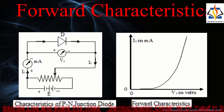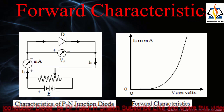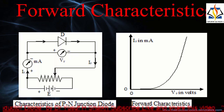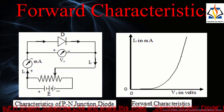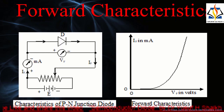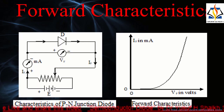The milliammeter measures the current flowing and the voltmeter measures the voltage across the diode. The forward voltage is gradually increased in suitable steps and the corresponding current readings from the milliammeter are recorded. A graph is then plotted between voltage and current; this graph is known as the forward characteristics of the p-n junction diode. From this curve, practically no current flows until the barrier potential is overcome. The forward voltage below which forward current is nearly zero, and just above which it starts increasing rapidly, is called the cut-in voltage.